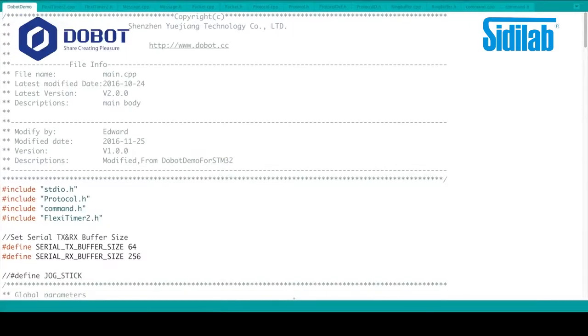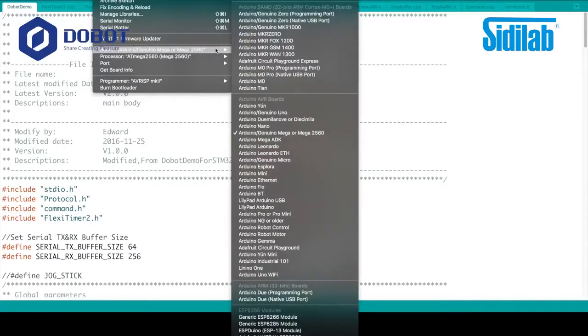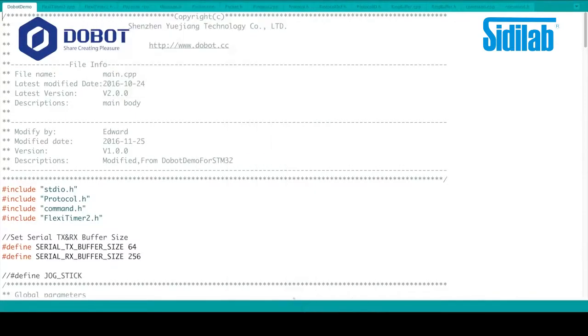And then, go ahead and go to Tools, Board, Arduino, Genuino, Mega or Mega 2560. Select that.